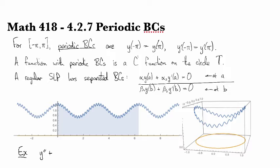We'll look at good old y double prime plus lambda y equals 0 on the interval from minus pi to pi with periodic boundary conditions.